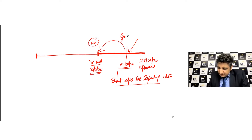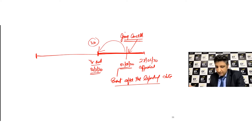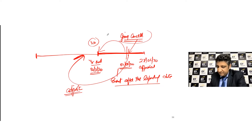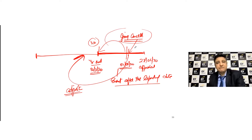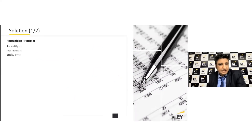But since this event is really casting doubt on the going concern ability of the business — questioning whether the business would continue in the future — we need to go back to the reporting date and adjust the financial statements as if the going concern assumption is not valid, even on that date. We need to prepare our financial statements on that basis. That is the underlying principle of this special case under Ind AS 10.